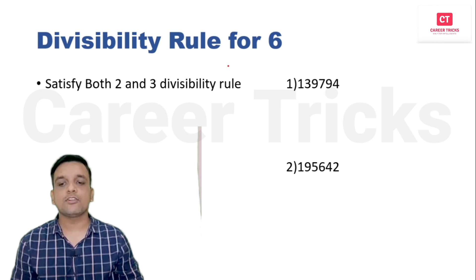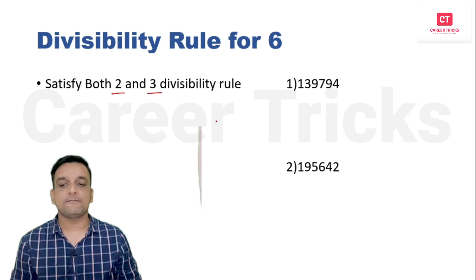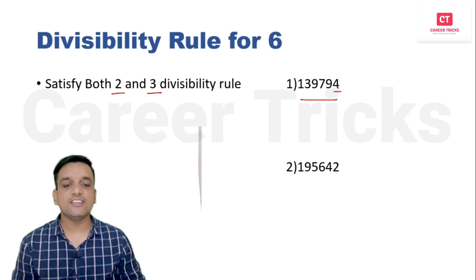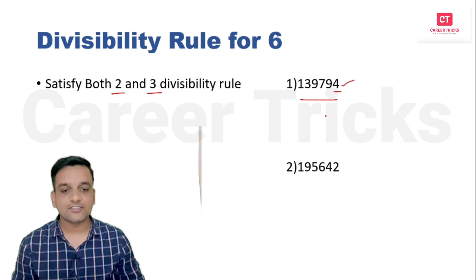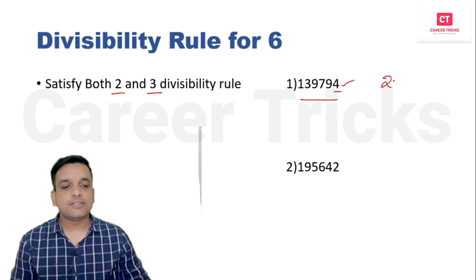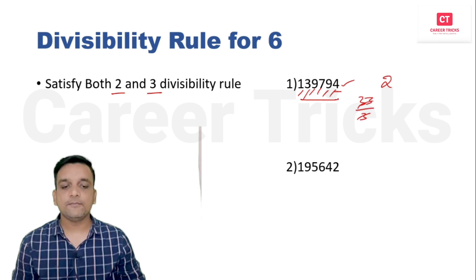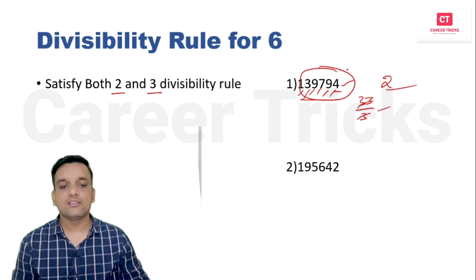Divisibility rule for 6: the number must satisfy both the rule for 2 and the rule for 3. Check the unit digit — if it is even, rule 2 is satisfied. Then add all the digits: 1 + 9 + ... = 33. Is 33 divisible by 3? Yes. Both conditions are satisfied, so this number is divisible by 6.